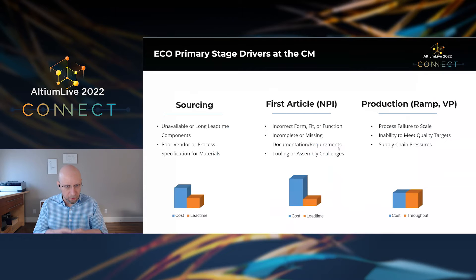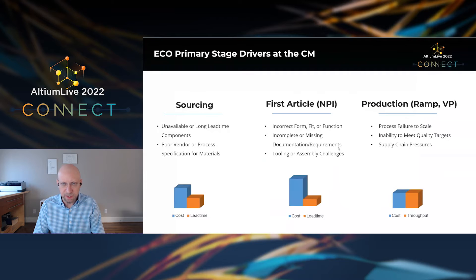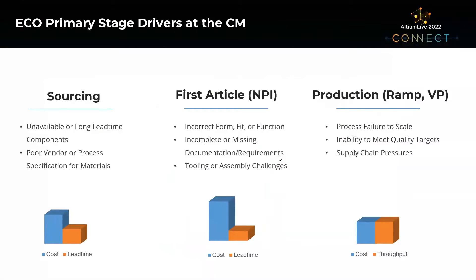From the contract manufacturer's perspective, there are three stages in production where we tend to see change orders. The first is in sourcing, usually triggered by unavailable or long lead time components, poor vendor selection, or process specification issues — for example, an injection molded component not meeting quality specifications, unable to produce in time, or costs changing as they learn more about the design. In sourcing, the primary impact is on cost, but there are pretty significant lead time impacts as well.